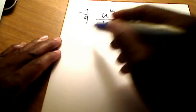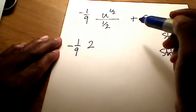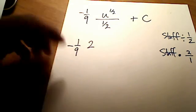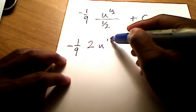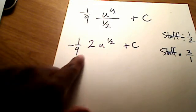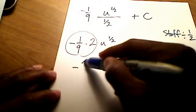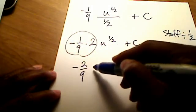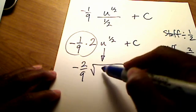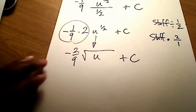So if I want to rewrite this, I could rewrite this as negative 1 over 9, 2. I'm flipping this denominator here of 1 half, flipping it. u to the 1 half plus c. And I hope you see that, I can multiply these two things together and just come up with negative 2 ninths u to the 1 half. Instead of writing it as u to the 1 half, I'll write it as the square root of u plus c. I'm almost done.